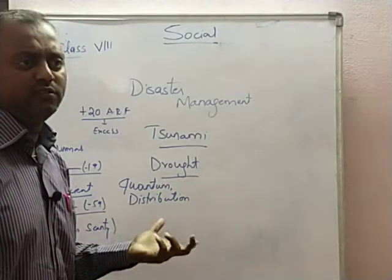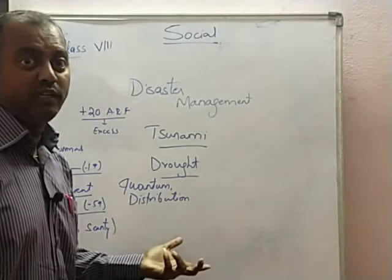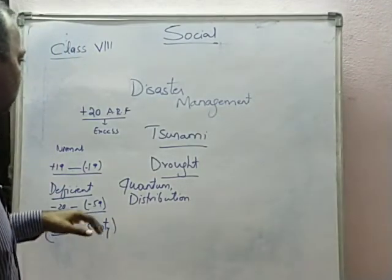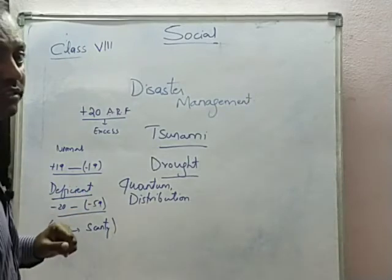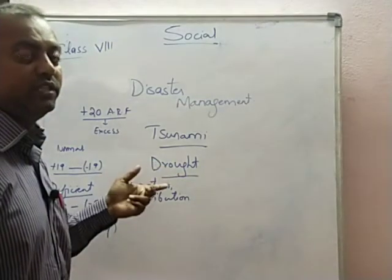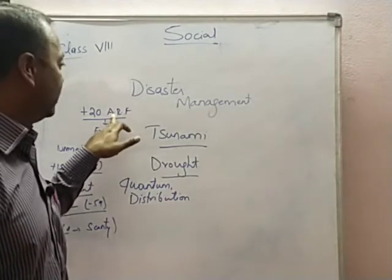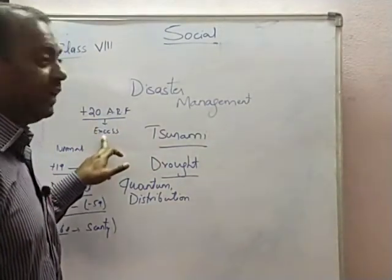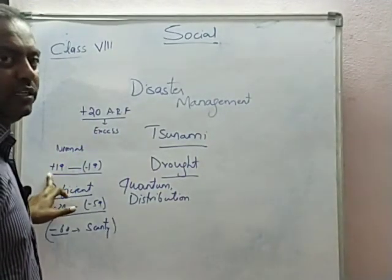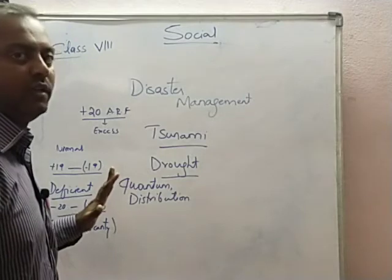Drought is a condition where there is a scarcity of rainfall. How drought takes place depends upon the average rainfall of that area. If the average rainfall is, let us imagine, 100 centimetres, something which is more than 20 centimetres above the average rainfall, then it is called excess rainfall. If it is more than 20% above the average rainfall, then it is called normal rainfall.